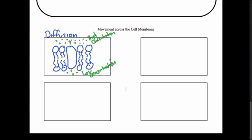Since molecules always want to move from high to low, these molecules are going to want to move across the cell membrane to the low concentration area. They're not all going to move across — molecules will move from high to low concentration until they reach equilibrium, meaning about an equal amount on each side. In simple diffusion, molecules move across the cell membrane by actually squeezing through the lipids from high concentration to low concentration until they reach equilibrium.